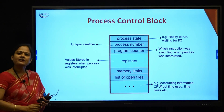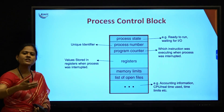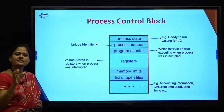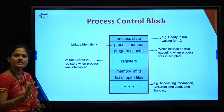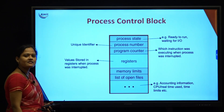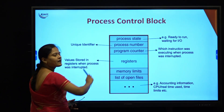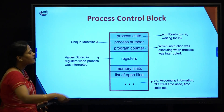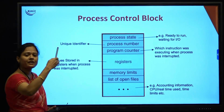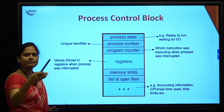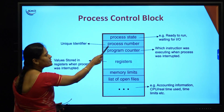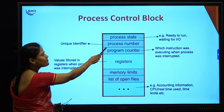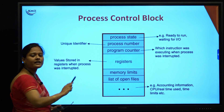Now that we have seen the different states of a process, the information related to a process has to be stored somewhere — that is called the process control block (PCB), also known as the task control block. The first parameter of the PCB is the process state — the current state of the process, which can be new, ready, running, waiting, or terminated. The next parameter is the process number: since there are n number of processes, each is given a unique ID called the process number.